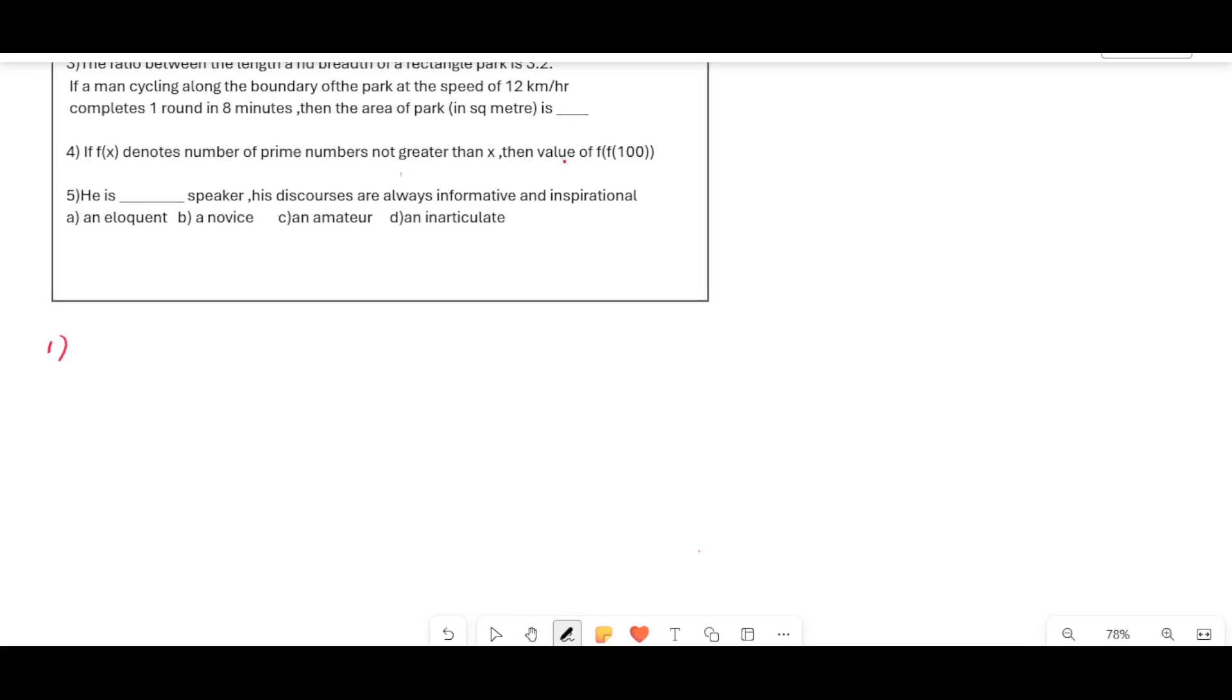First question. There are 7 men and 6 women. Total 5 persons are to be selected for the committee, and there should be at least 3 men in the committee. So how many ways can we select?